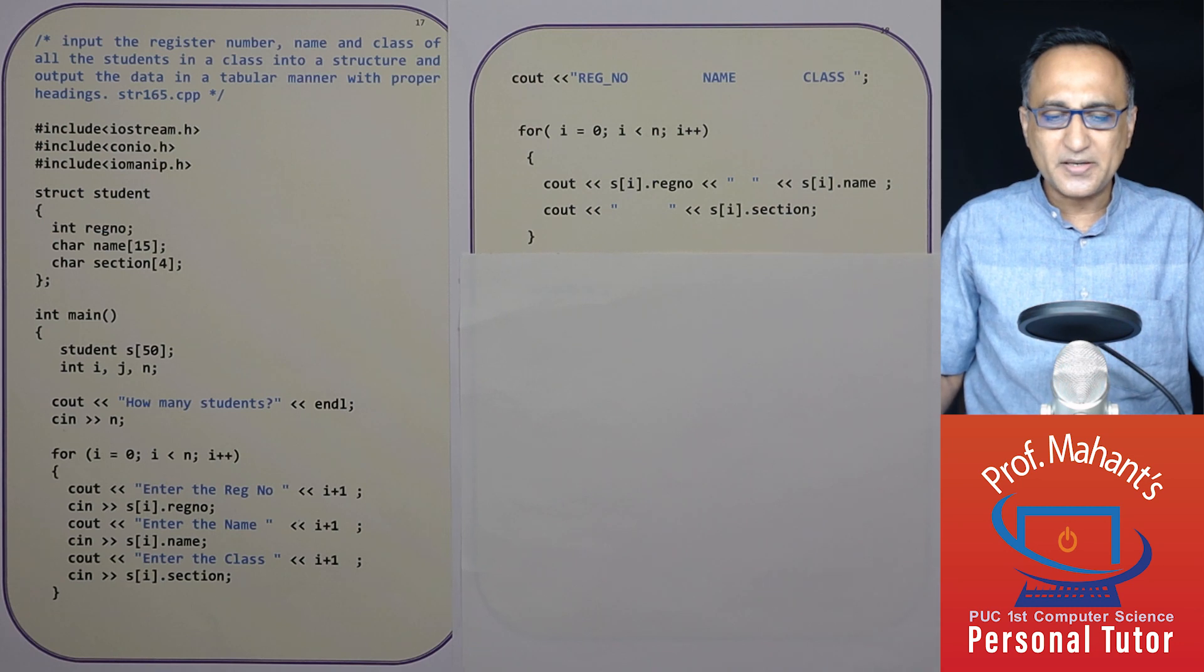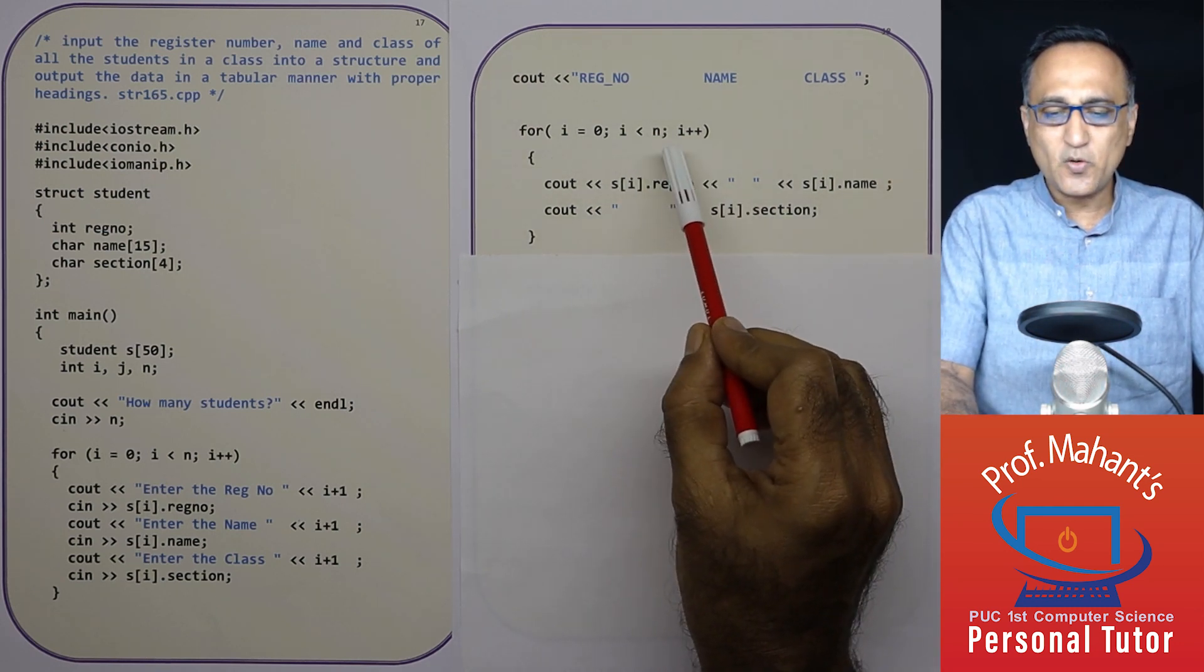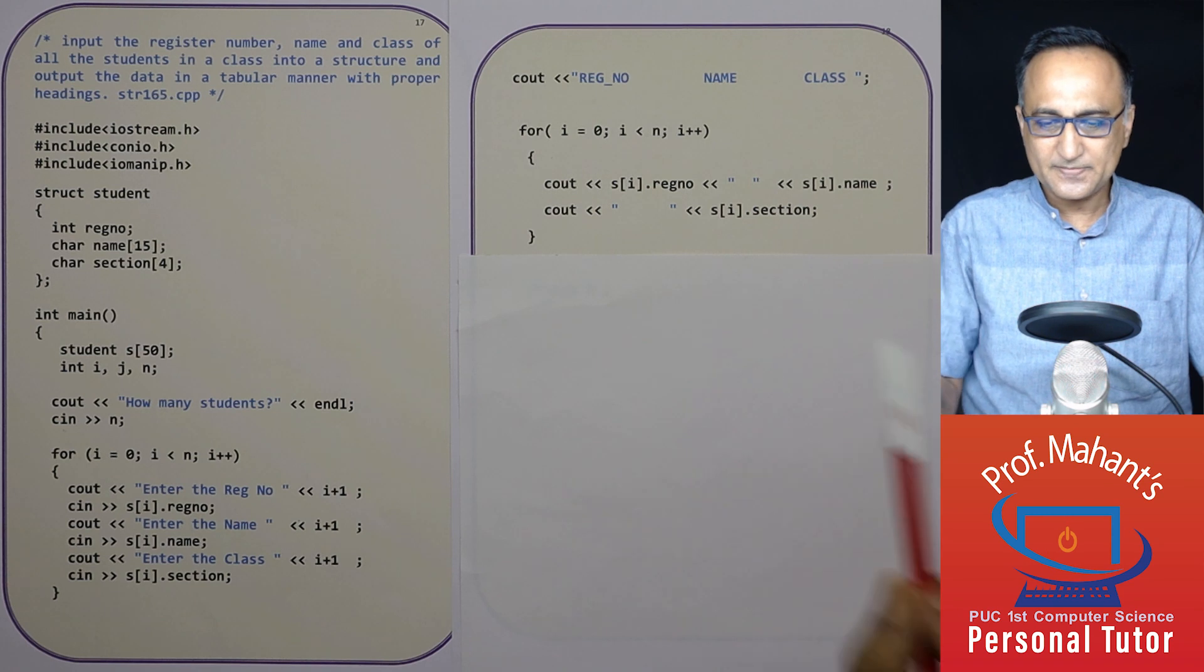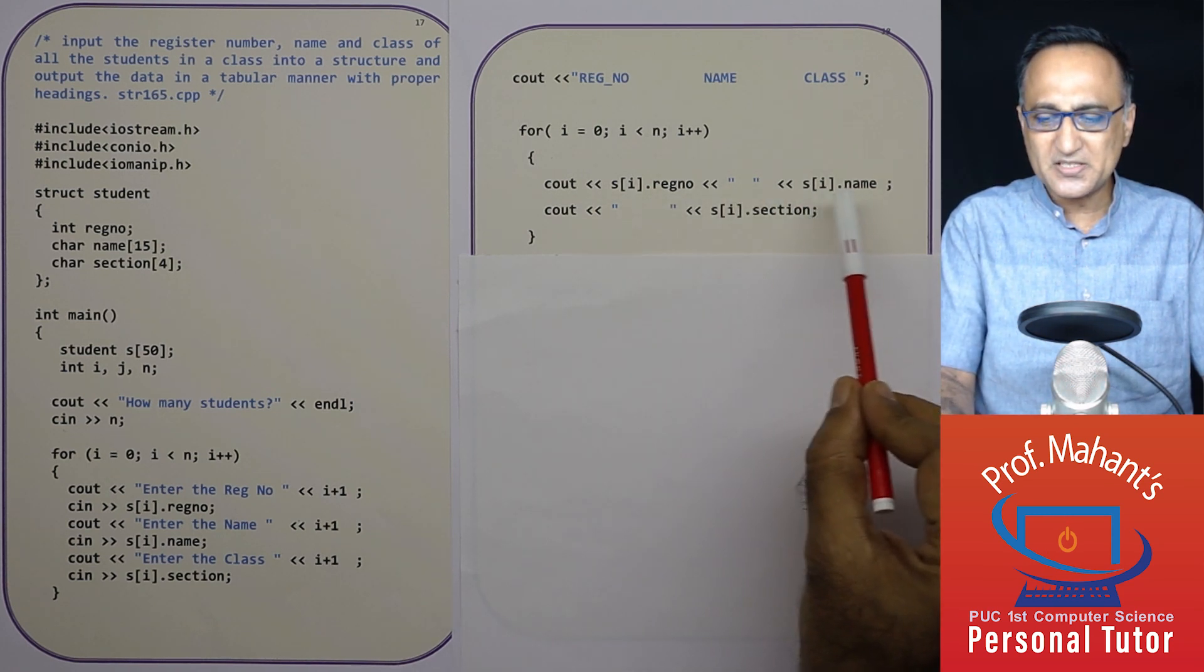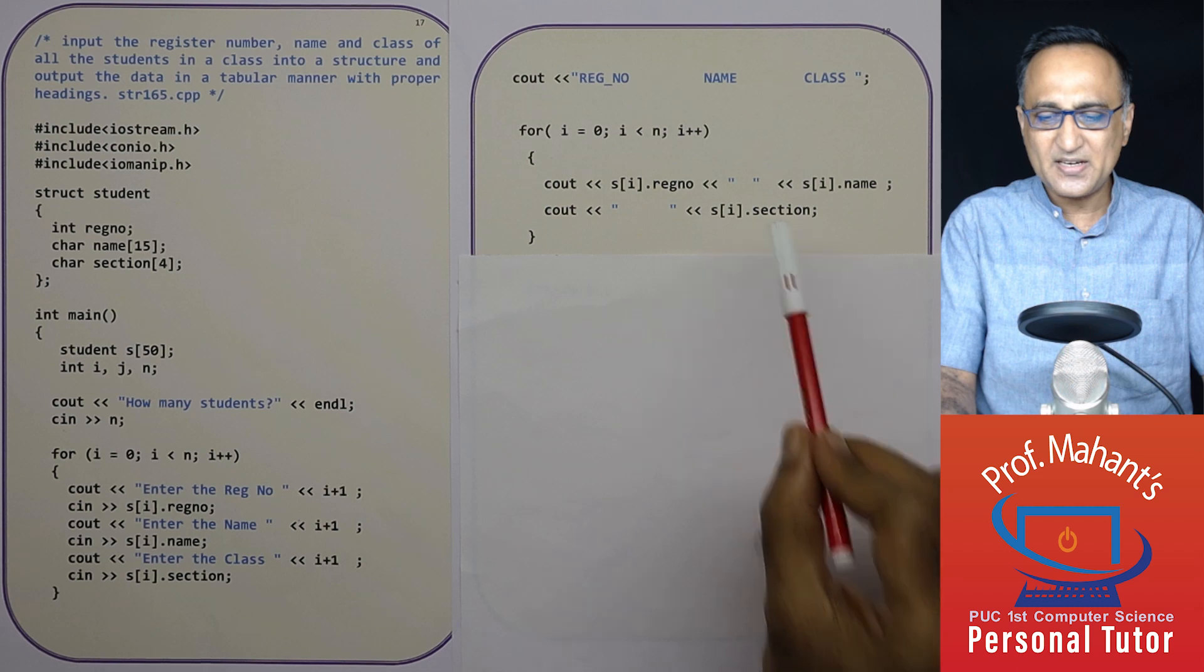Now just look how simple it is. Here what I have done is for i equal to zero, i less than n, i plus plus. I have printed registration number, a little bit space, name, a little bit space and section.